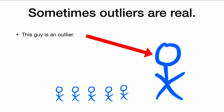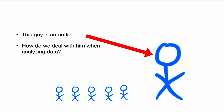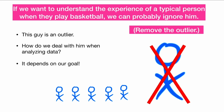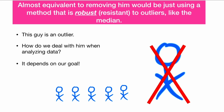Sometimes outliers are not fake — sometimes they are real. This guy is actually very, very tall. He is an outlier. How do we deal with him when analyzing data? Well, it really should depend on our goal. If we want to understand the experience of a typical person when they play basketball, we can probably ignore the one outlier and remove him from the data set. Almost equivalent to removing him would be to use a method that is robust or resistant to outliers, like the median, which is not affected by extreme outliers.